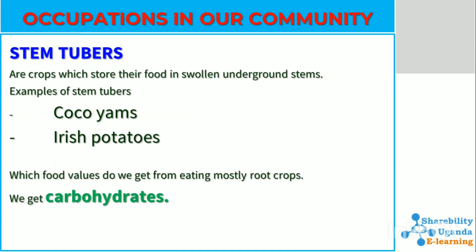Stem tubers are another example of a root crop. Stem tubers are crops which store their food in swollen underground stems. Examples of stem tubers include cocoa yams and Irish potatoes, among others. We get carbohydrates from eating stem tubers.